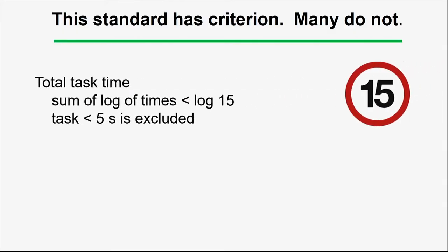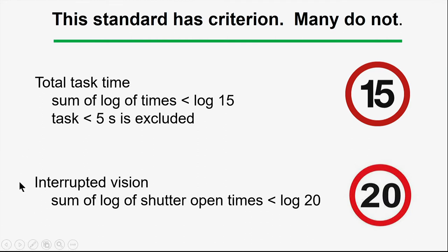There was a great deal of controversy about what should be the acceptance criterion. For the static method, the total task time cannot exceed basically 15 seconds — though it's a little more complicated, because you take the log of the times and sum them, looking if it's less than the log of 15. This was done because some tasks had extremely long times on individual trials, and simple addition led to things passing due to one oddball trial. Additionally, if a task takes less than five seconds, it's excluded from the analysis. For the interrupted vision method, we sum the shutter open times and check if they're less than 20 seconds, again using a log procedure, not strictly additive.